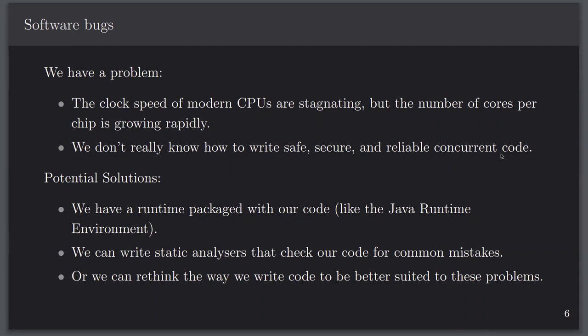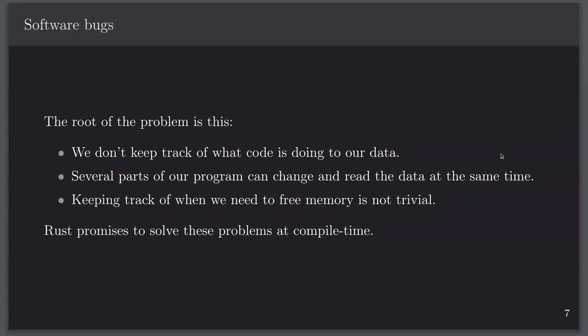But static analyzers aren't the solution we're looking for. Figuring out whether a piece of code will have those memory problems is not actually computable — it's undecidable — so that will help with most things but not everything. Or we can rethink the way we write code to be better suited towards these specific problems. Rust is the thing that rethought the way we write code. Rust promises that it will deal with these memory and concurrency problems at compile time. If your code has these problems, the Rust compiler will say 'no, you can't compile it.' Whenever you run code written in Rust, none of these problems will apply.